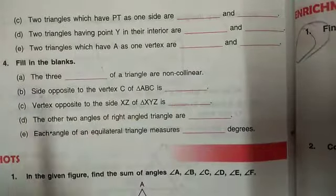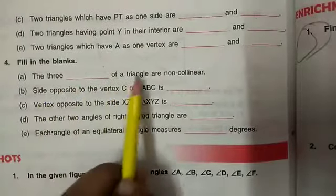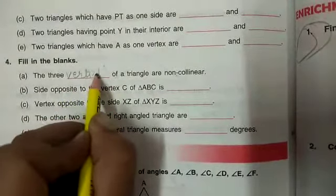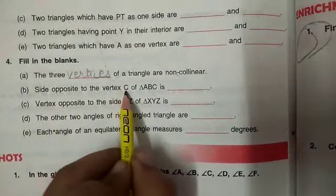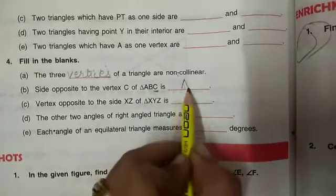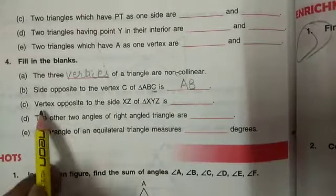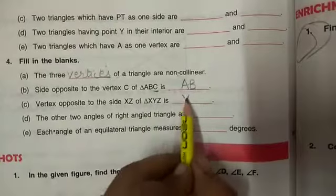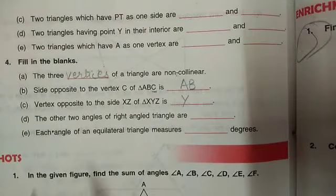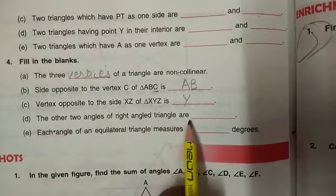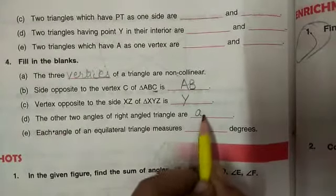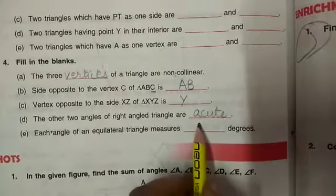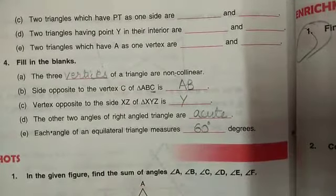Now, question number 4: The three blanks of a triangle are non-collinear. The three vertices of a triangle. Side opposite to vertex C, which one should be? AB. Vertex opposite to side XZ of triangle XYZ. Leave XZ, what is left? Y. Answer should be Y. Other two angles of right angle triangle are acute, that is less than 90 degrees. Each angle of an equilateral triangle measures 60 degrees.